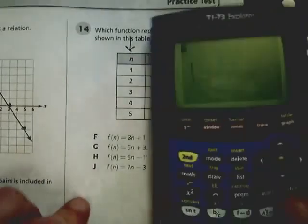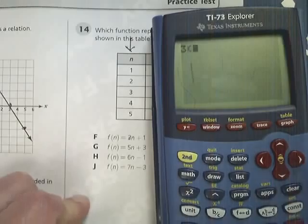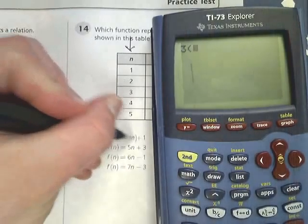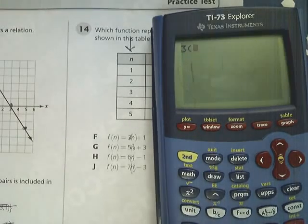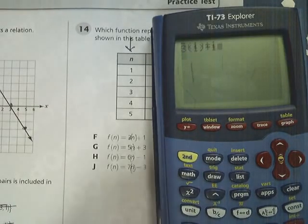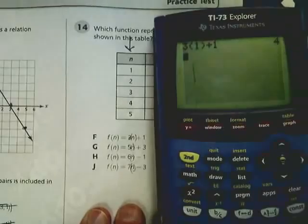So this is 3n plus 1, so I'm going to do 3. And where the n is, I'm always going to put parentheses. That'll make your life much easier later. I'm going to put in an input of 1, and it gives me 4. So this is looking good so far.